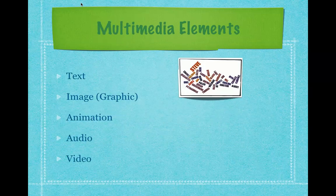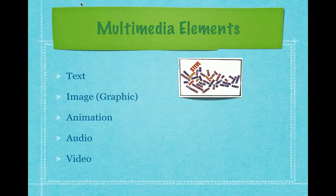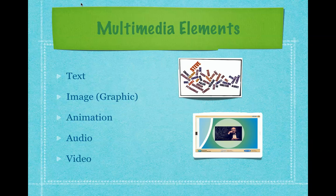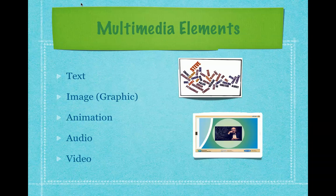Now we have different elements of multimedia. Number one is text. Text is used to deliver content as well as for instructions, menus, and hyperlinks. We also have images or graphics, which refers to digital representations of photographs, drawings, charts, and other visual objects. We already discussed the common graphic formats like GIF (Graphics Interchange Format), PNG (Portable Network Graphics), and JPEG (Joint Photographic Experts Group), so I will not discuss those further.